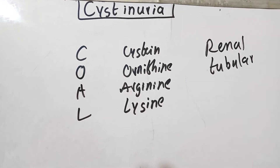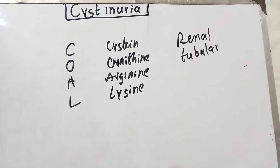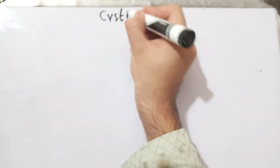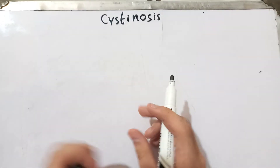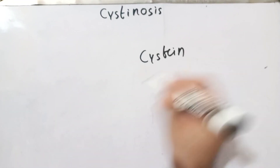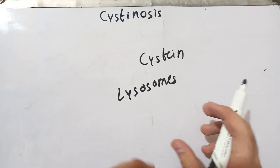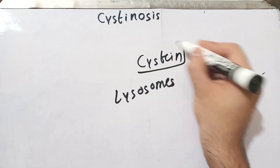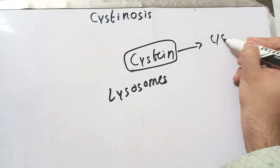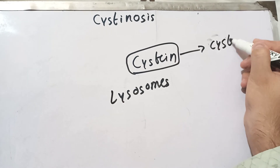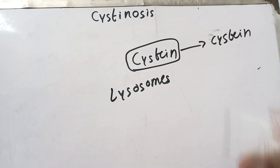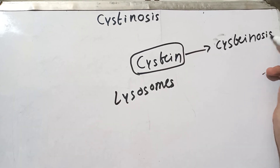Now let's talk about cystinosis. You mainly need to differentiate between cystinuria and cystinosis. Cystinosis is a disease caused by the inability of cystine to move out of the lysosomes into the cytoplasm for metabolism. As a result, cystine starts accumulating in the lysosomes, leading to the formation of cystine crystals — this is the disease called cystinosis.